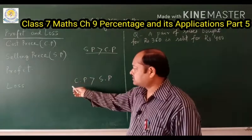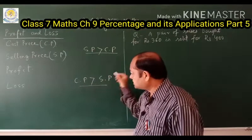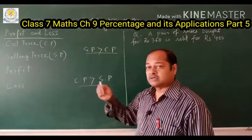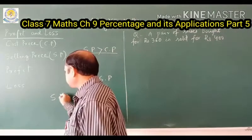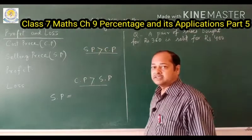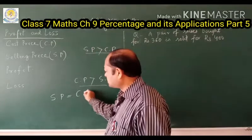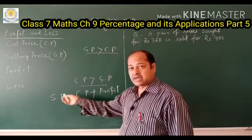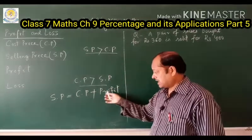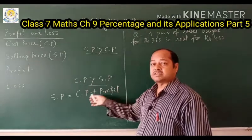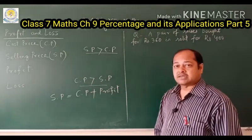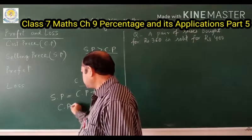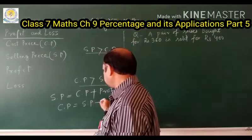So profit means SP is greater than CP, and loss means CP is greater than SP. Now, how to calculate the selling price if the profit is known: Selling Price = Cost Price + Profit. And Cost Price = Selling Price − Profit.